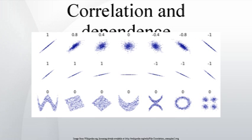Correlation and Linearity. The Pearson correlation coefficient indicates the strength of a linear relationship between two variables, but its value generally does not completely characterize the relationship. In particular, if the conditional mean of y given x — denoted E(y|x) — is not linear in x, the correlation coefficient will not fully determine the form of E(y|x). The image on the right shows scatter plots of Anscombe's quartet, a set of four different pairs of variables created by Francis Anscombe. The four y variables have the same mean (7.5), variance (4.12),